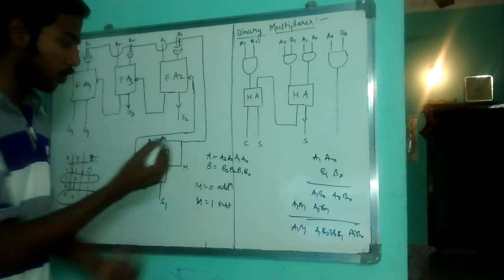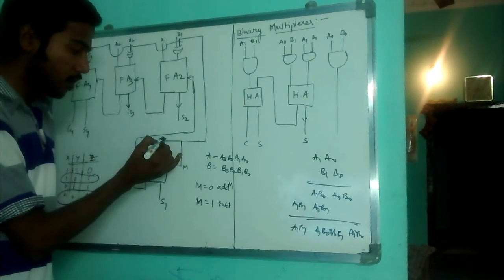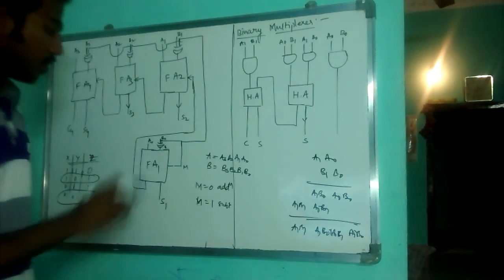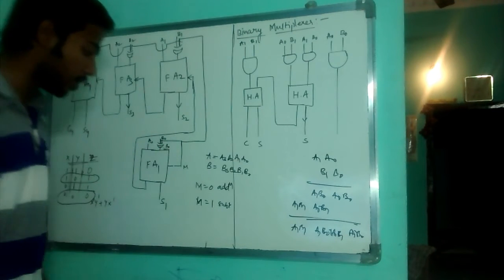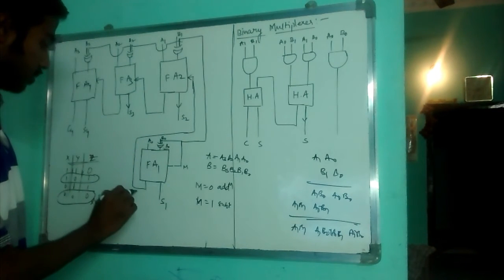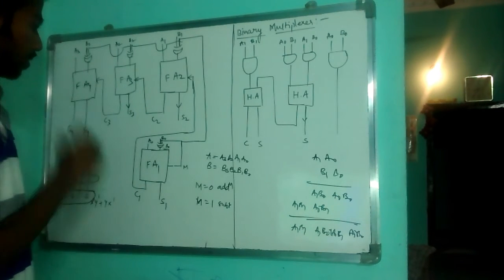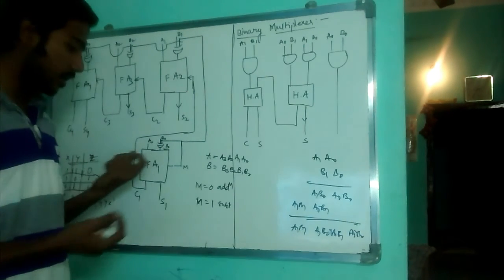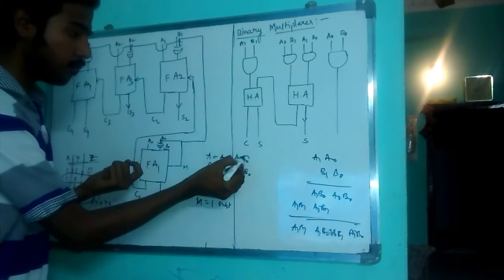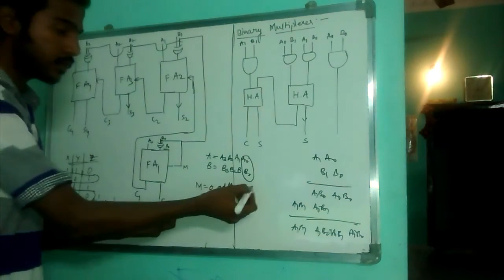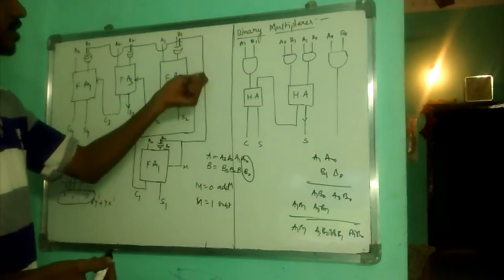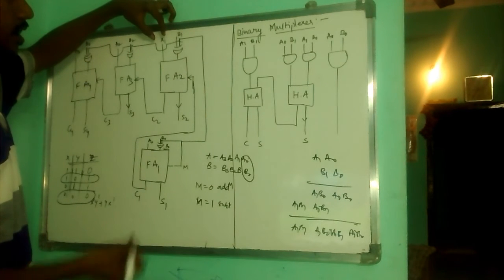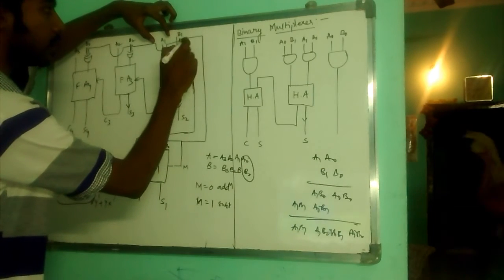So, whenever M is 0, M is 0 and along with B0, we are given to XOR gate, the output will be B0 only. Now, for the summation, for the sum, A0 and B0, as it is an adder, it adds both A0 and B0, give it a sum, and produce a carry. This carry is given to full adder 2, along with B1, B1 and M has to XOR gate again.